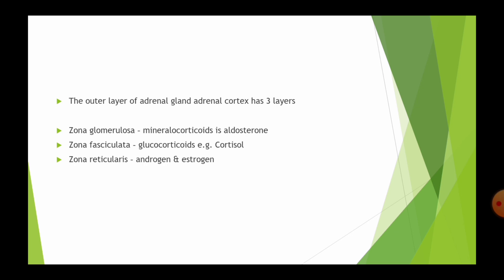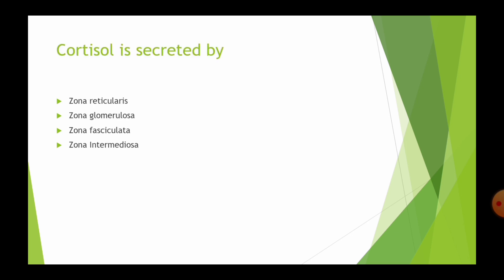Zona glomerulosa produce mineralocorticoids. For example, aldosterone. Zona fasciculata produce glucocorticoids such as cortisol. Zona reticularis produce androgens, sex hormones like estrogen and androgen. So, cortisol is produced by Zona fasciculata.